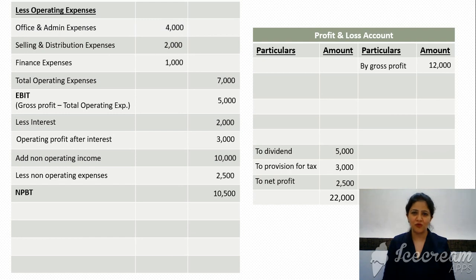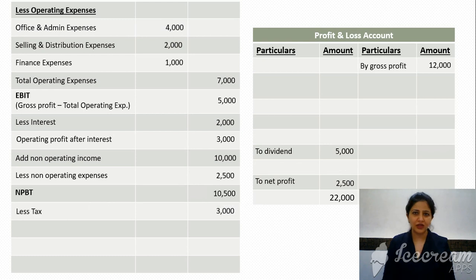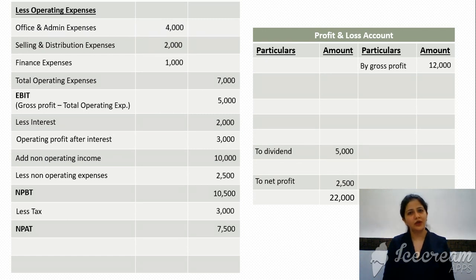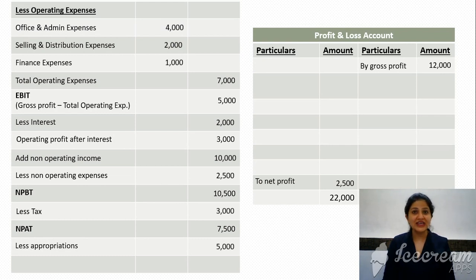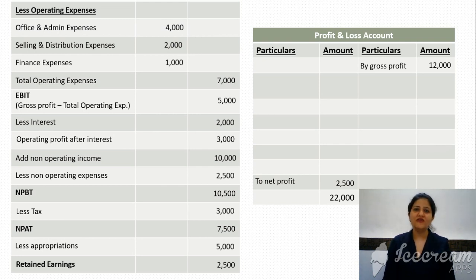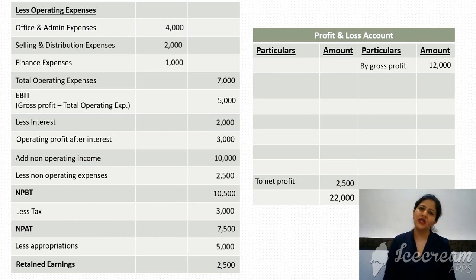That gives net profit before tax. Reducing tax gives net profit after tax — in this example, 7,500. From this, we reduce appropriations like dividends or transfer to reserves, giving us retained earnings of 2,500, which matches the net profit shown in the P&L account. I hope you have understood the income statement format, which will be used in further videos on tools of analysis — comparative, common size, and trend analysis.